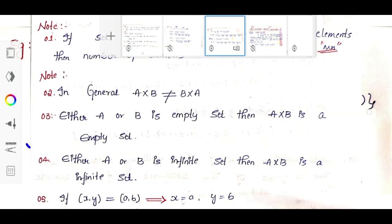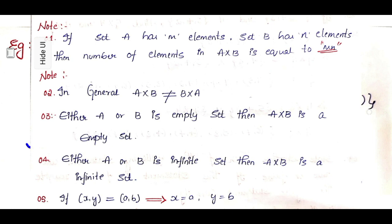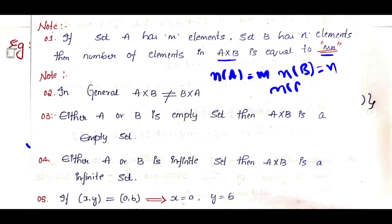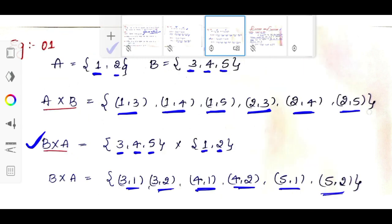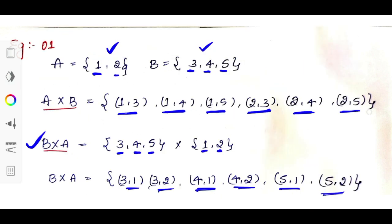There are 5 important points. First: if set A has m elements and set B has n elements, then the number of elements in A cross B equals mn. Second: in general, A cross B is not equal to B cross A. For example, in A cross B the ordered pair (1,3) is present, but in B cross A, ordered pair (1,3) is not there — instead (3,1) is there. Ordered pair (1,3) and ordered pair (3,1) are different, so A cross B is not equal to B cross A.